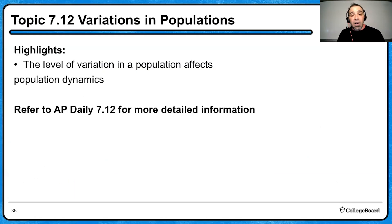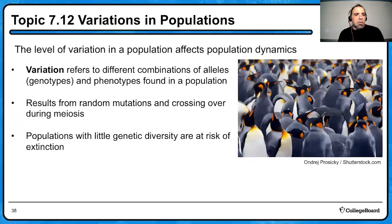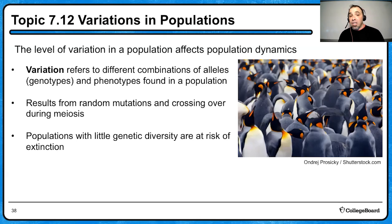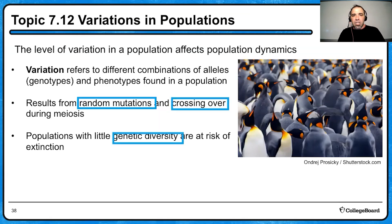Moving on to topic 7.12, variations of populations. The highlight: the level of variation of a population affects population dynamics. Refer to AP Daily 7.12 for more detailed information. Variation refers to different combinations of alleles, genotypes, and phenotypes found in a population. Variation is important — it's the driving force for natural selection. By having variation in populations, new species can arise or speciation can occur. Variation results from random mutations during DNA replication, crossing over during meiosis; populations with little genetic diversity are at risk of extinction.